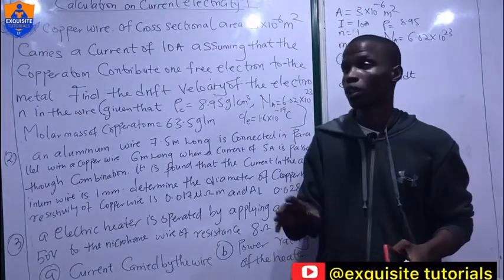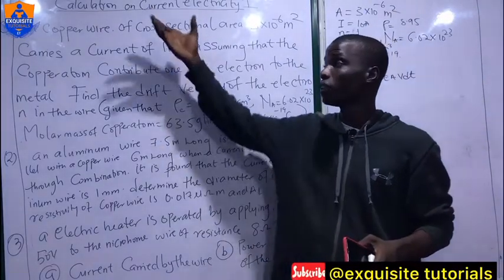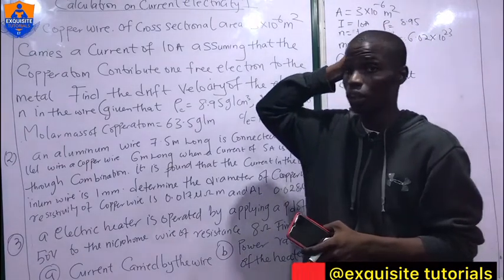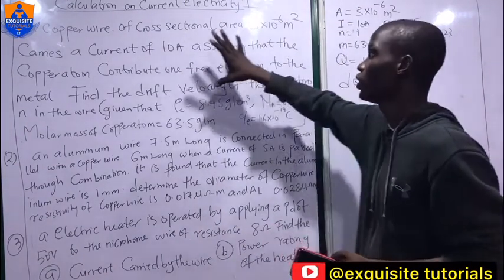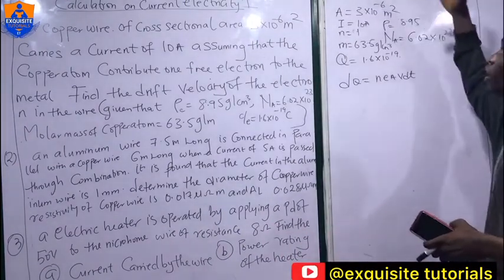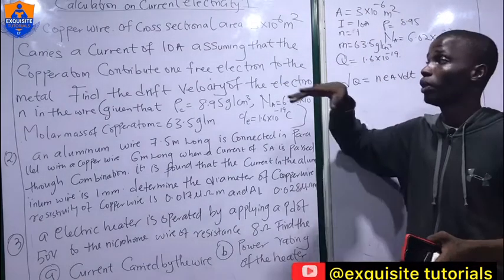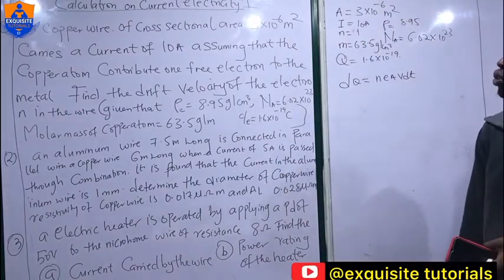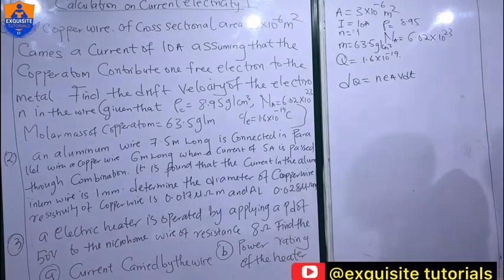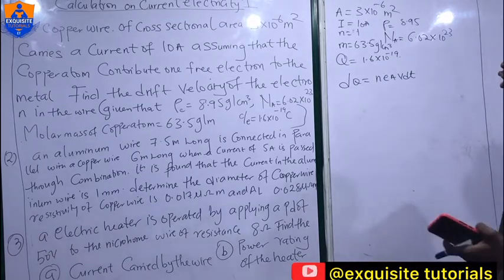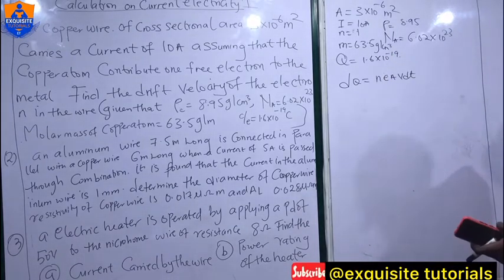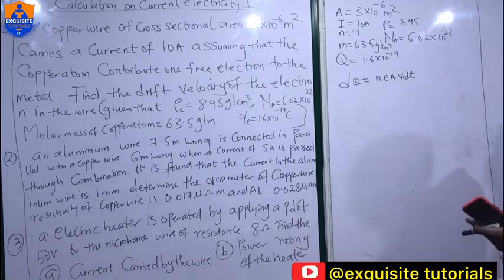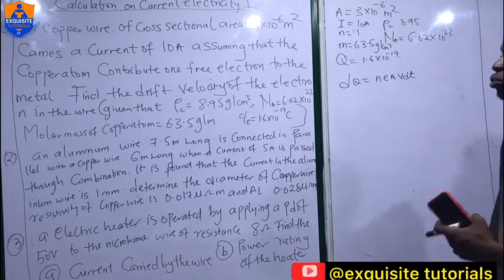Hello everyone, this is the SQC tutorial. I'll be giving the calculation aspect on current electricity. From the first question, we are given that the cross-sectional area is 3×10⁻⁶, the wire carries a current of 10 amperes, one electron is given per atom, and we have the molar mass and density. We are told to calculate the drift velocity.